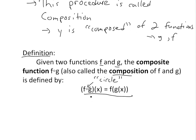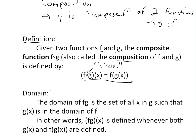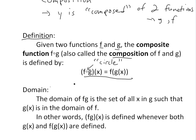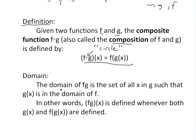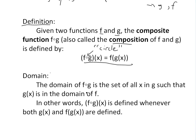When we look at the domain of f∘g, this is important. Basically, the domain of f circle g is the set of all x in g such that g of x is in the domain of f. So this composite function is defined whenever both g of x and f of g of x are defined.